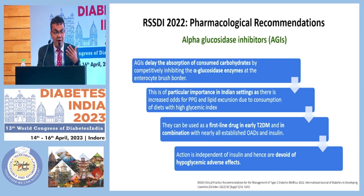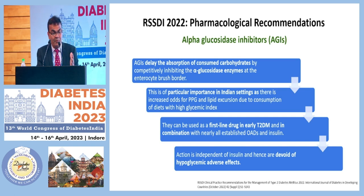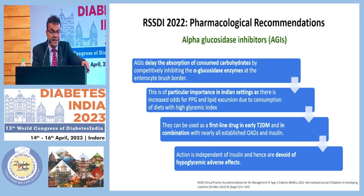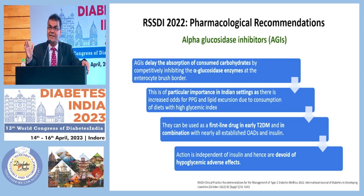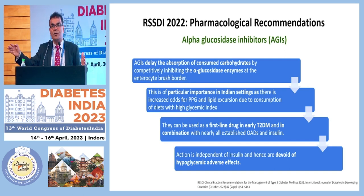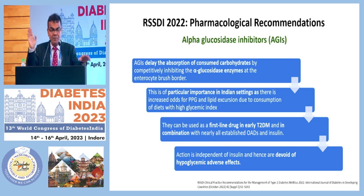RSSD in 2022 came out with guidelines on alpha-glucosidase inhibitors. Our pharmacological recommendation: alpha-glucosidase inhibitors delay the absorption of consumed carbohydrate by competitively inhibiting the alpha-glucosidase enzyme at the enterocyte brush border. This is of particular importance in the Indian setting due to increased post-meal glucose and lipid excursions from high glycemic index diets. They can be used as a first-line drug in early type 2 diabetes and in combination with nearly all established oral anti-diabetic agents as well as insulin, including as a pre-diabetic therapy for controlling post-meal glucose.